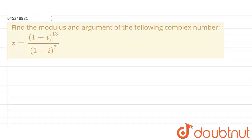The question is to find the modulus and argument of the following complex number. The complex number is (1+i)^13 upon (1-i)^7. The proper form should be written as (a+ib)^power.